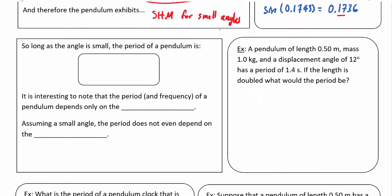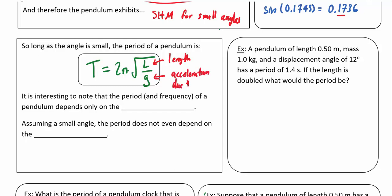As long as the angle of the pendulum is small, the period equals T equals 2π times the square root of L over g, where L is the length and g is acceleration due to gravity. The period and frequency depend only on the length of the pendulum — to change g you'd have to move to a different planet. For small angles the period does not even depend on the mass.